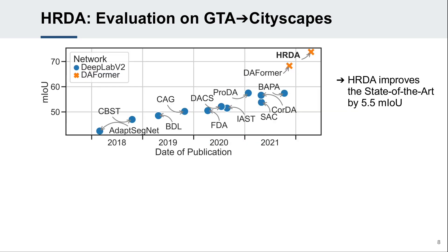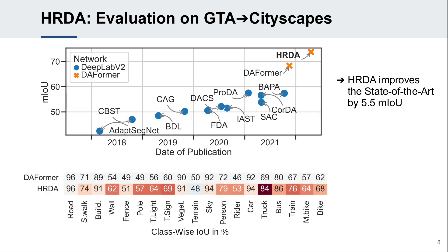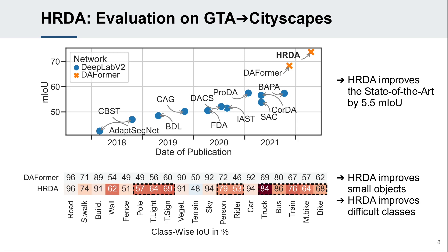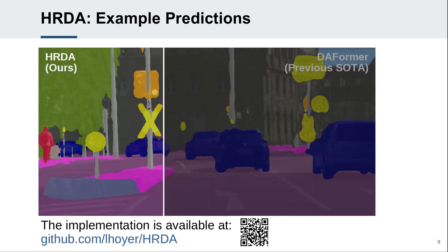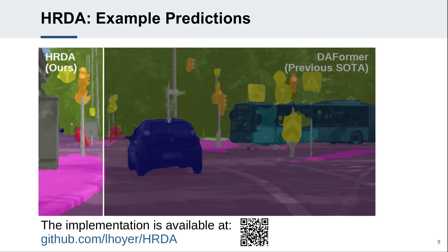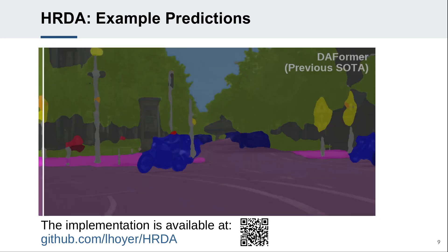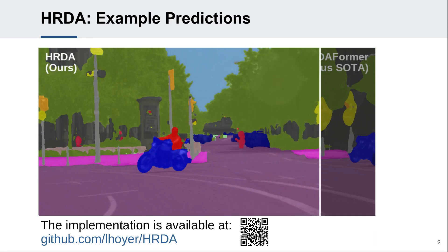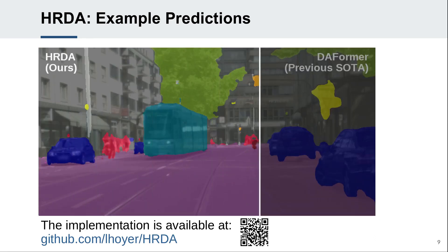When combined with DA-Former, HRDA improves the state-of-the-art performance by a significant margin of 5.5 mIoU. HRDA particularly enhances the performance of small objects such as pole, traffic sign, and person, as well as semantically similar classes such as truck, bus, and train. This is also reflected in the example predictions, showing that HRDA can better recognize small objects and distinguish difficult classes.